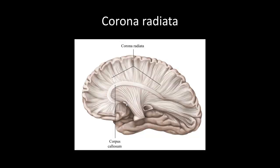Next we have a parasagittal section — parasagittal meaning next to midline. First we start with the corona radiata, a white matter structure that carries information from the cerebral cortex to deeper areas of the brain. These are axons carrying information from the cerebral cortex, which is gray matter, down to lower areas of the brain.